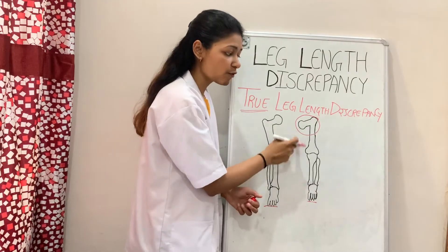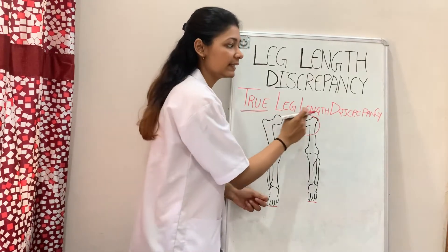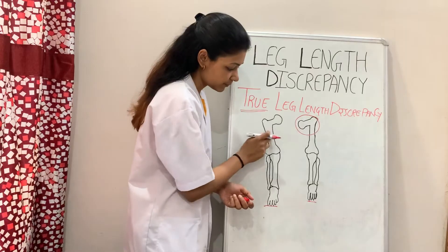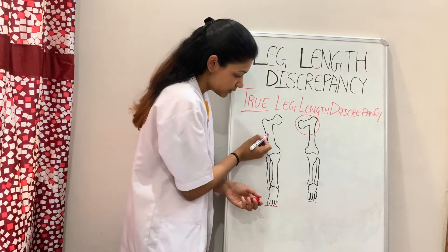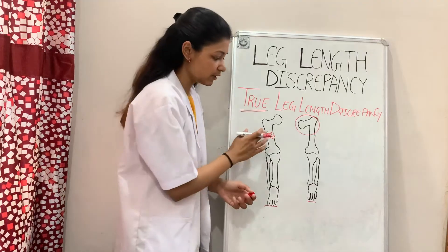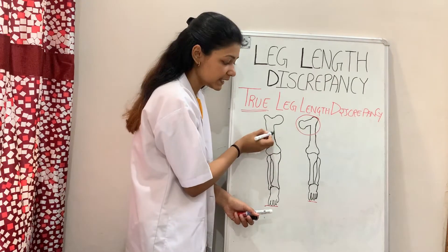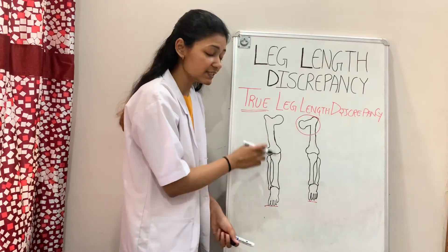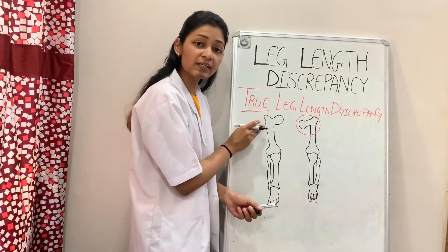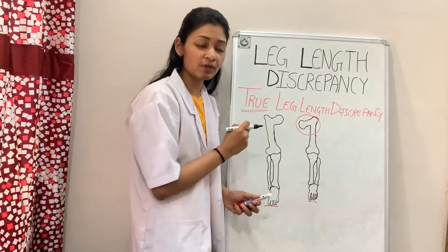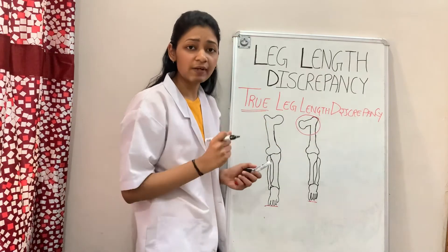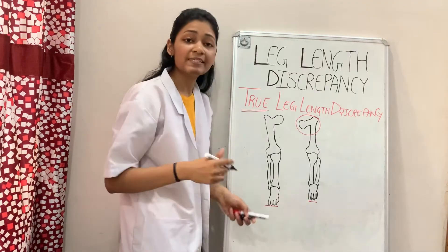Let me give you one more example. Suppose a person suffered a comminuted fracture, in which the bone breaks into many pieces. After the comminuted fracture, when the bone heals, if the femur becomes short, then automatically this limb will appear short. That will also be considered true leg length discrepancy, because the femur is short — there is a change in the anatomical structure of the bone.